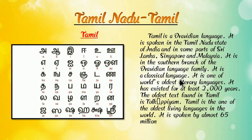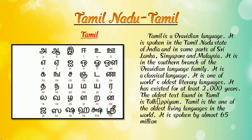Tamil is a classical language and one of the world's oldest literary languages. It has existed for at least 2,000 years. Tamil is one of the oldest living languages in the world and is spoken by almost 65 million people. The state of Tamil Nadu mostly speaks Tamil, and Tamil is also spoken in Sri Lanka and Malaysia.